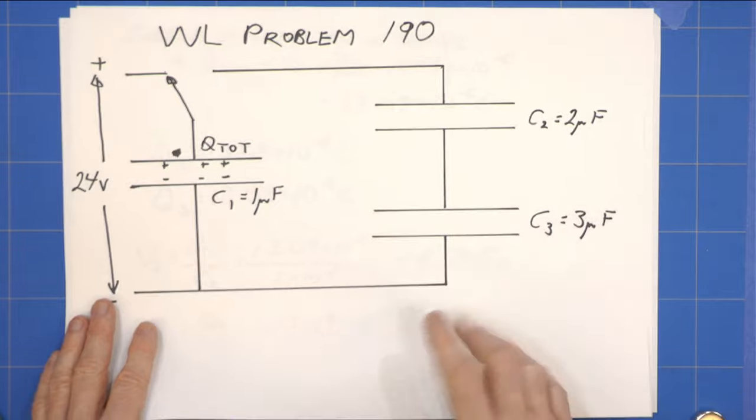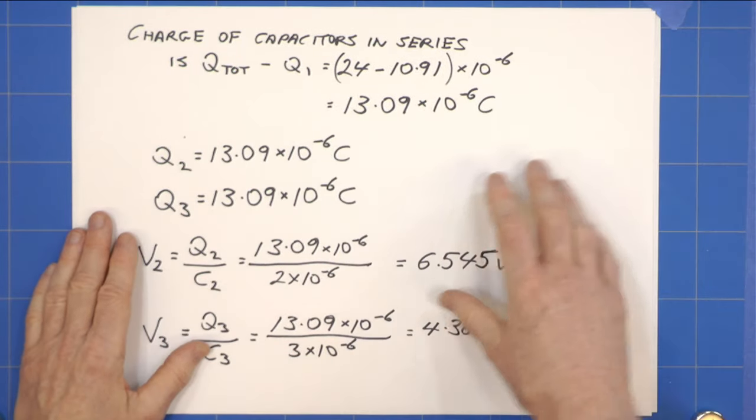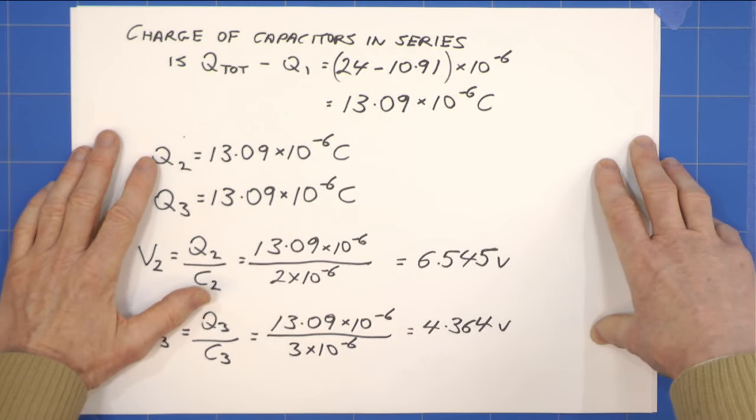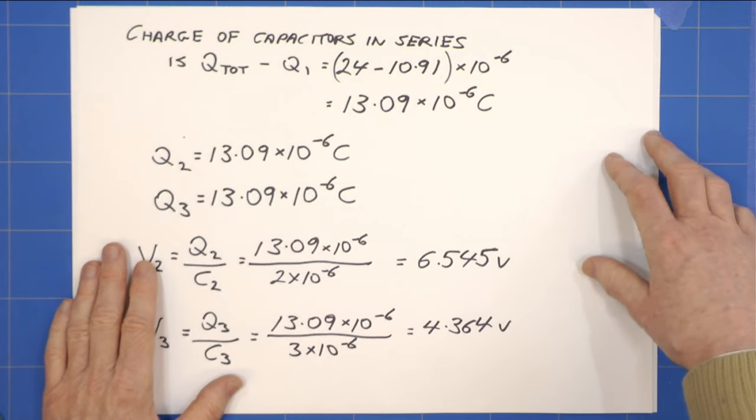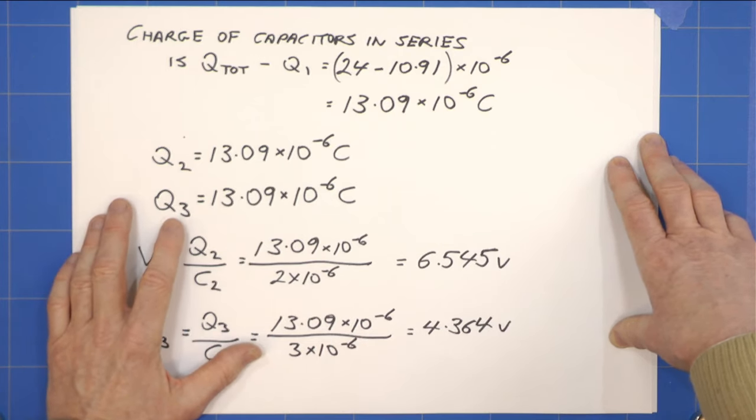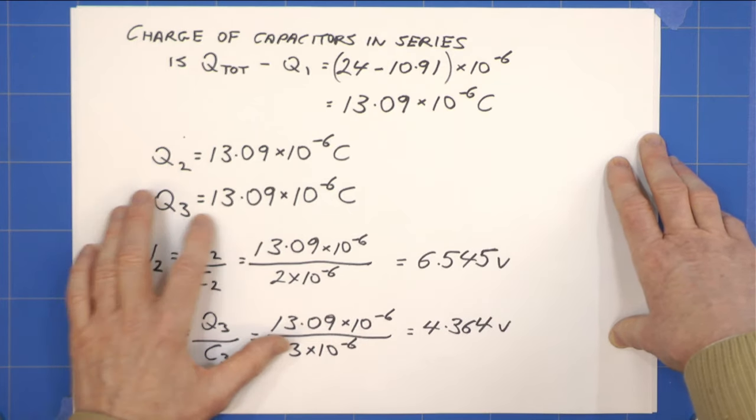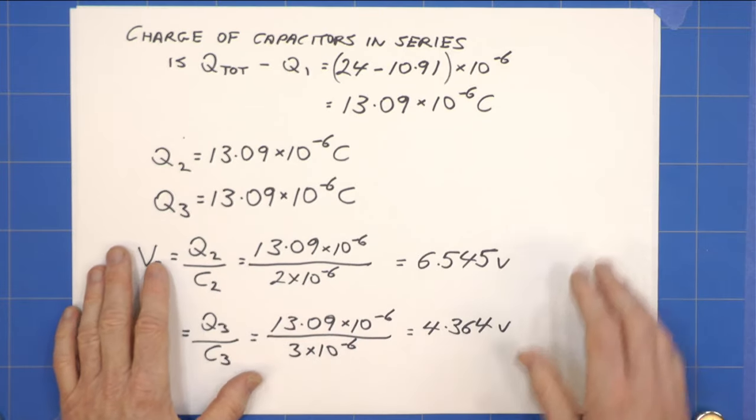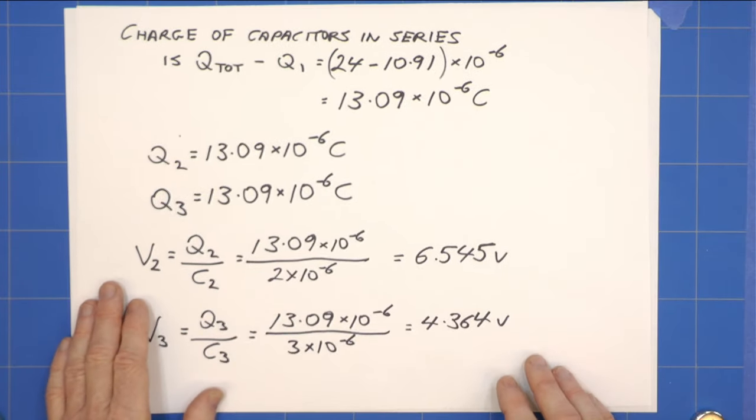So we immediately know that the charge on capacitor 2 is 13.09 times 10 to the minus 6 and we know that the charge on capacitor 3 is 13.09 times 10 to the minus 6 coulombs. As I've just said they're the same.